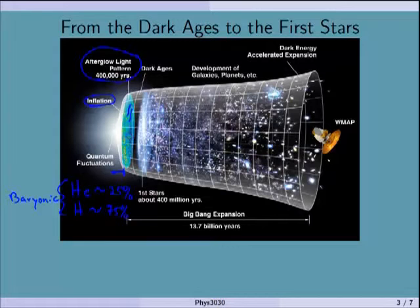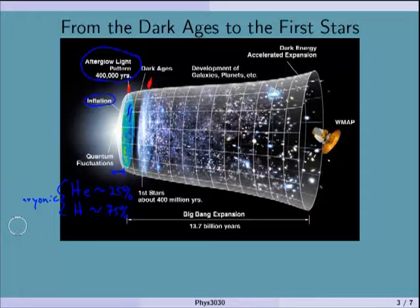What we want to do today is get us from this recombination period to the first stars and talk about this early period of stars. The Dark Ages are really just this part of the history of the Universe where there's no real light, because the photons have been absorbed. There's light from the CMB floating around, but there are no stars giving off new light. We go from this time in the Dark Ages to a time when there's all kinds of structure.